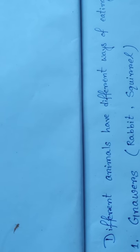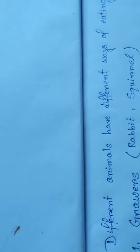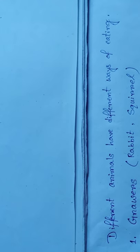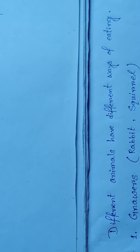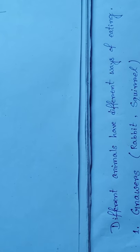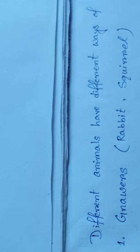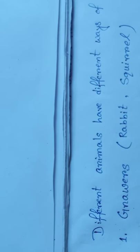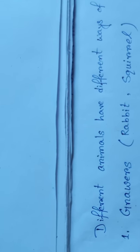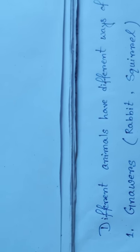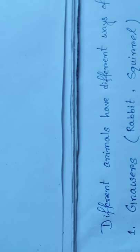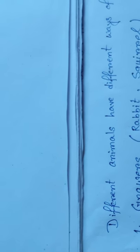Different animals eat different types of food. The kind of food they eat depends upon the shape of their mouth, jaws and teeth. Some animals like rabbit, squirrel and rat have sharp, chisel-like teeth. With these teeth, they can bite even hard and rough food grains, nuts and other things. They gnaw their food, so they are called gnawing animals.